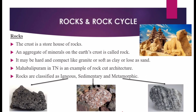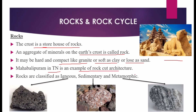The crust is the storehouse of rocks. An aggregate of minerals on the Earth's crust is called rock. It may be hard and compact like granite, or soft as clay, or loose as sand. The ancient city of Petra in Jordan is an example of an entire city carved out of rock. Mahabalipuram in Tamil Nadu is an example of rock-cut architecture in India. Rocks are classified as igneous, sedimentary, and metamorphic.